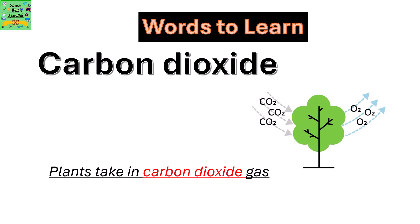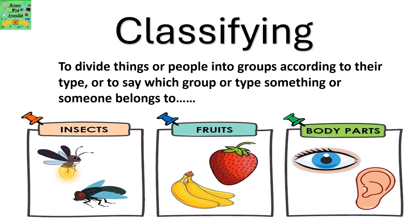Words to learn. Carbon Dioxide: Plants take in carbon dioxide gas. Classifying: Classifying is to divide things or people into groups according to their type or to say which group or type something or someone belongs to.